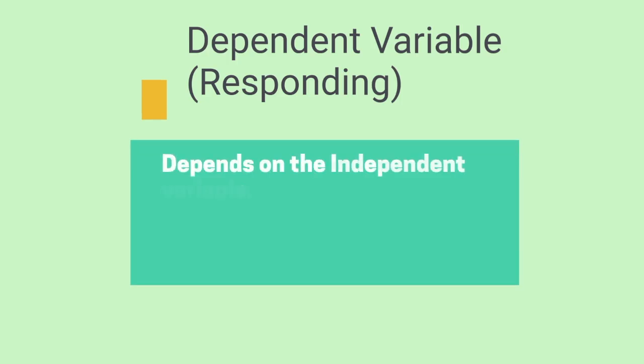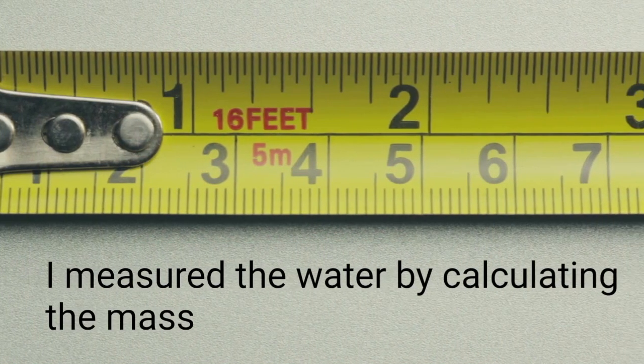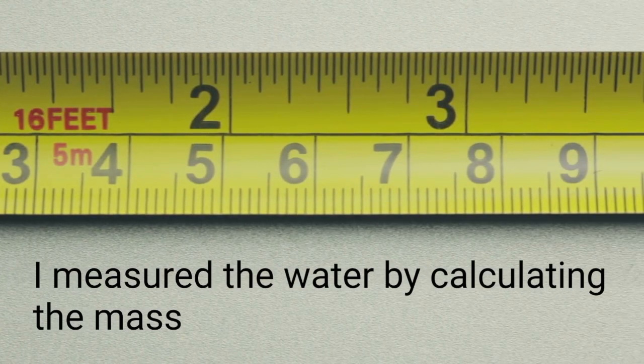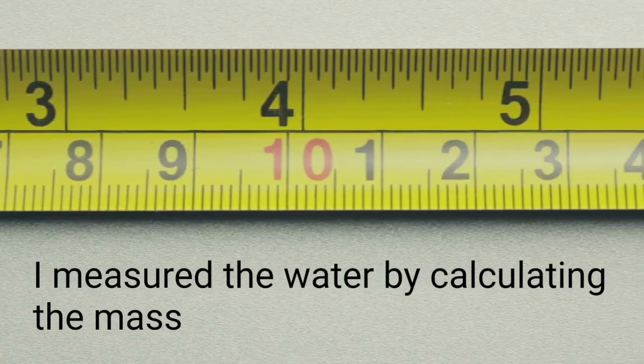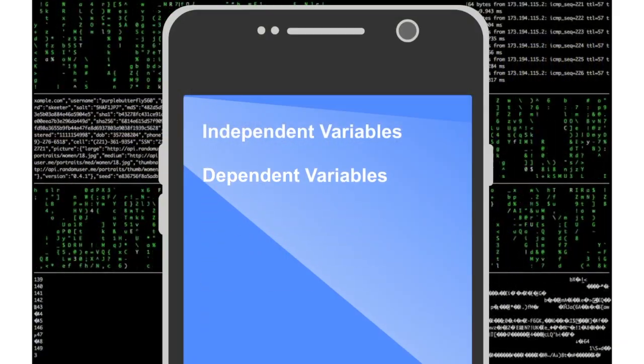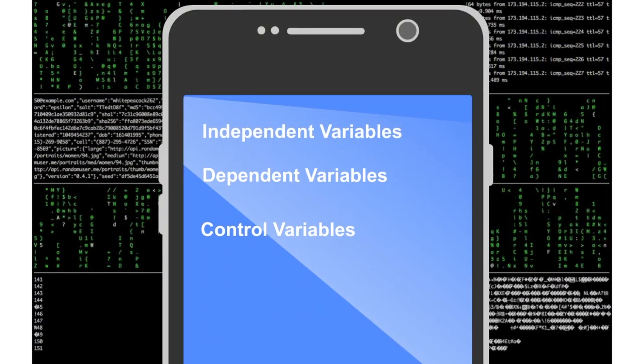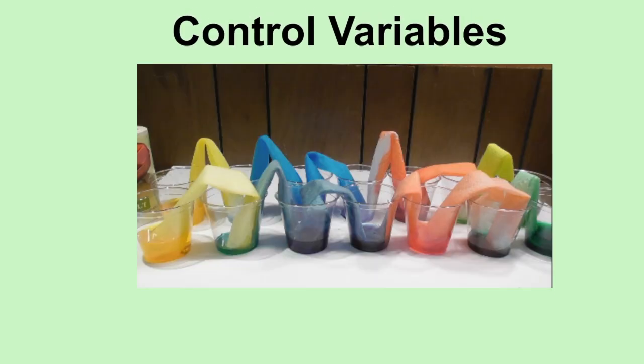The dependent variable depends on the independent variable and you measure this variable. You measure the amount of water that walked or traveled into the empty cup. That would be your dependent variable. And you had several constant or control variables. You use the same type of cup, you had the same amount of water, the same paper towels, etc.